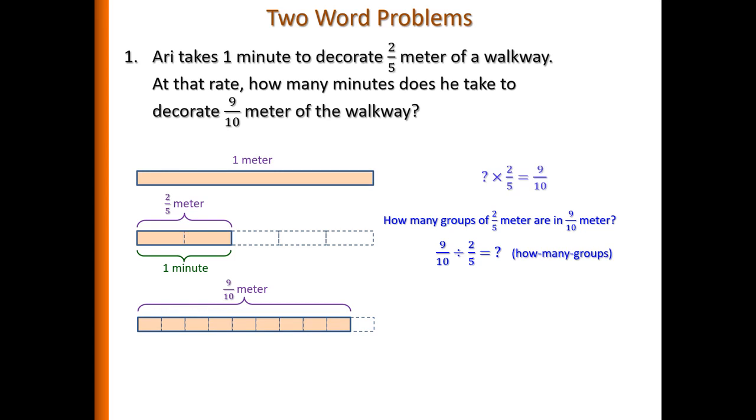In terms, if you can also model it using multiplication, it's basically asking how many groups of two-fifths are in nine-tenths. So it's the multiplier that is unknown. Now in order to solve this computationally, we can use the common denominator strategy. So it's not easy to see how many two-fifths are in nine-tenths. But if you convert the two-fifths into tenths, you will see that two-fifths are actually four-tenths. So if we replace the two-fifths meter into four-tenths, there are actually four pieces of one-tenth.